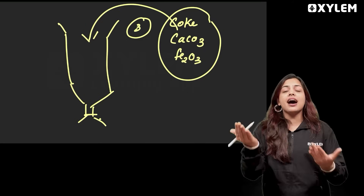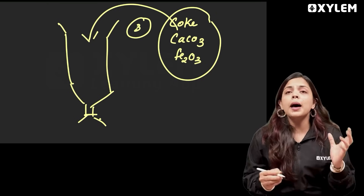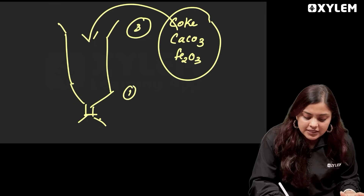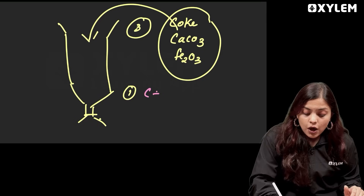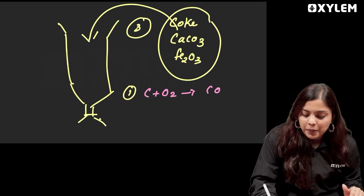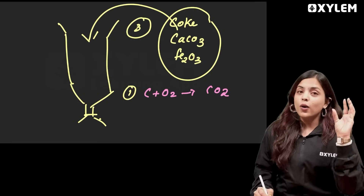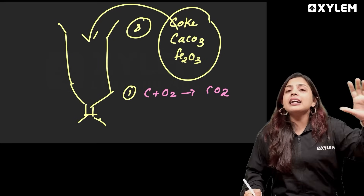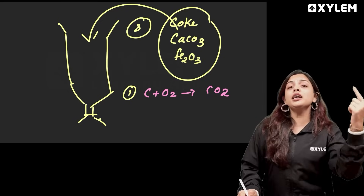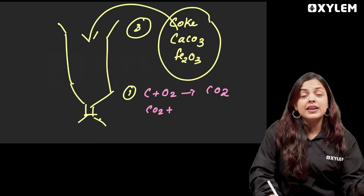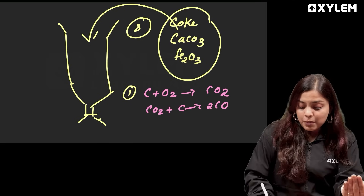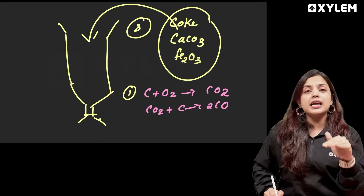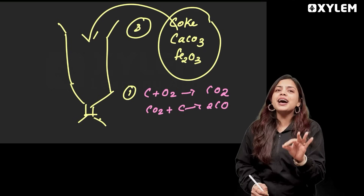The first step involves adding oxygen. Carbon reacts with oxygen to form carbon dioxide (CO2). This is the first reaction taking place inside the blast furnace.